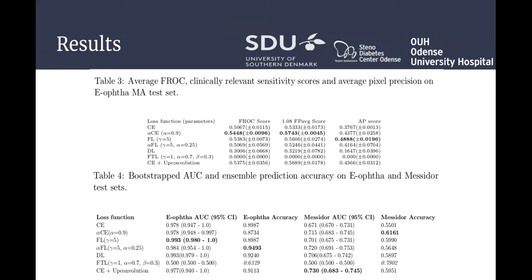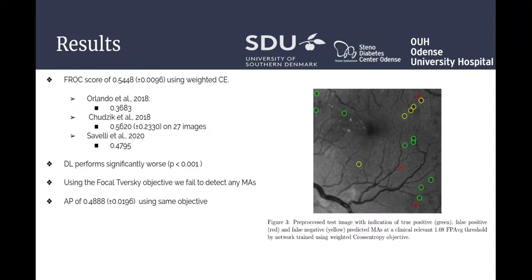To summarize, we achieve the highest FROC score of 0.54 using weighted cross-entropy. This is as good or better in comparison to similar methods. We note that the Dice loss performs significantly worse. Using the focal Tversky loss, we fail to detect any microaneurysms. The highest average precision score of 0.48 is also achieved using weighted cross-entropy. The example on the right shows true positive detected microaneurysms in green circles, false positives in red, and false negatives in yellow.